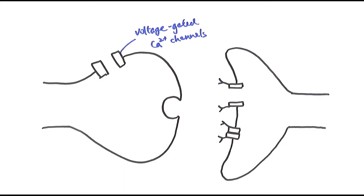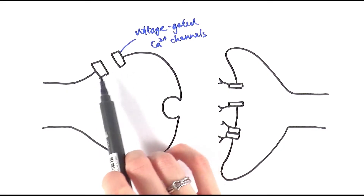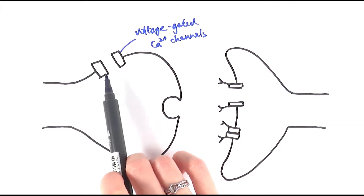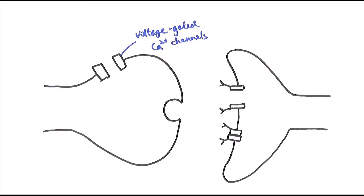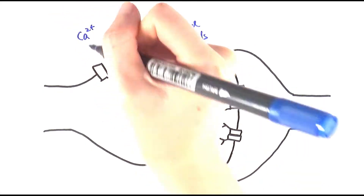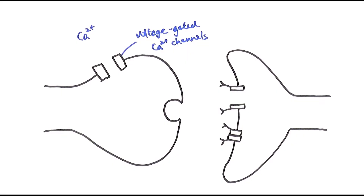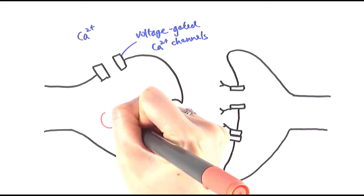If you're unsure, it's helpful to go back to the video about action potentials. The surface of the pre-synaptic neuron has many of these voltage-gated calcium ion channels, and there are many calcium ions on the outside of the neuron — a higher concentration on the outside than inside. Inside the pre-synaptic neuron there are vesicles that contain acetylcholine.